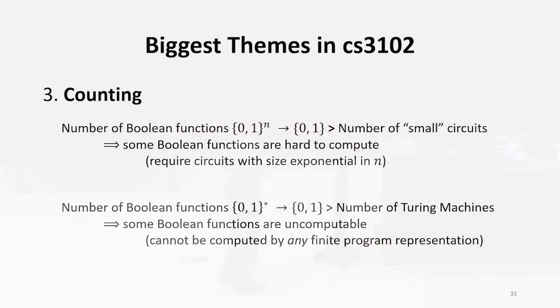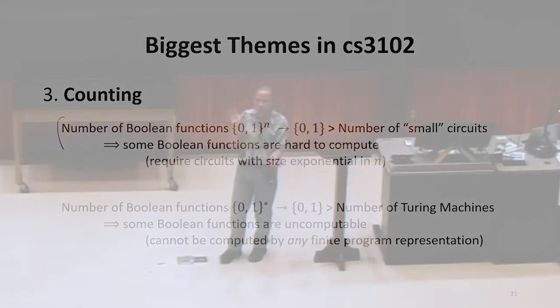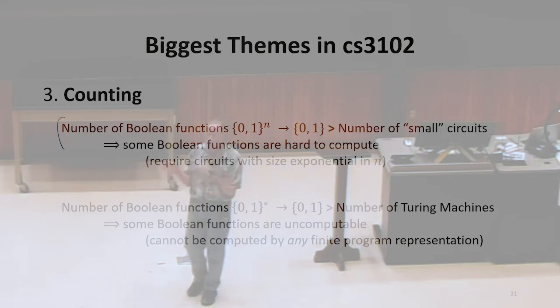I think that real powerful ones are these proofs that we've done, and we've seen two examples, ones that I think are most important. We showed that the number of Boolean functions of size input n is greater than the number of circuits that are small. By just counting and comparing the number of functions to the number of circuits, that said there must be some functions that are hard to compute.